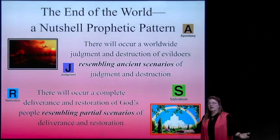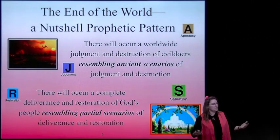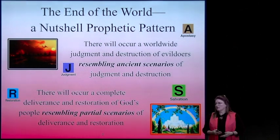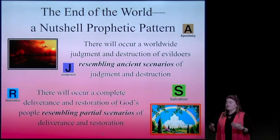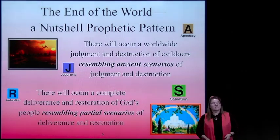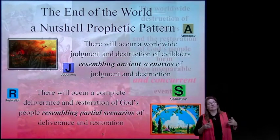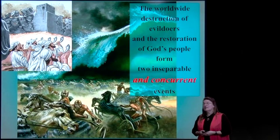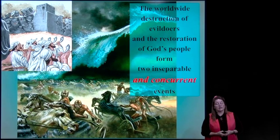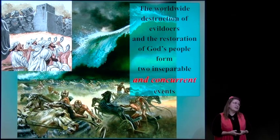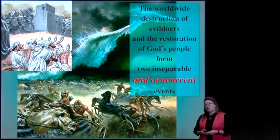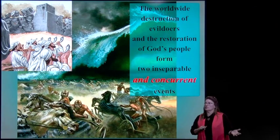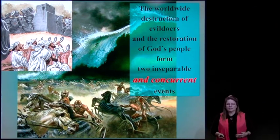Ezra and Nehemiah didn't see a full fulfillment and restoration of the temple when they went back to Jerusalem after their captivity in Babylon. As a matter of fact, they mourned that it was nothing compared with the glory of Solomon's temple. And in Haggai, they're promised that in a future time, that temple will be more glorious than Solomon's temple. So many of these restoration prophecies are millennial in their nature.